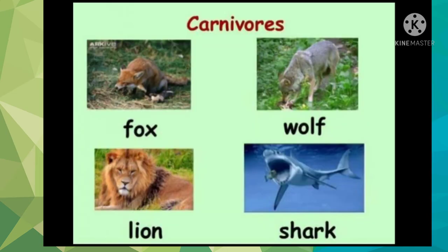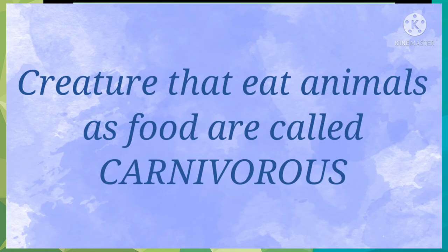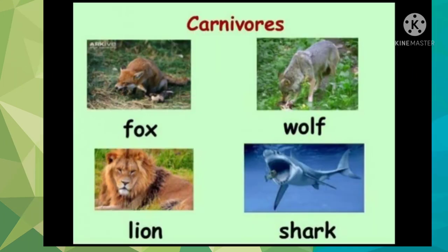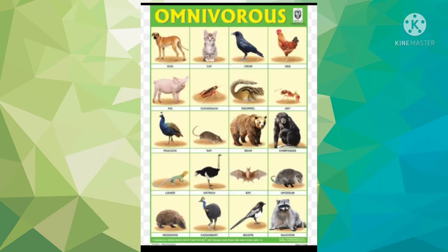The second category is carnivores. Creatures that eat only animals as food are called carnivores. Examples include lion, cheetah, etc.